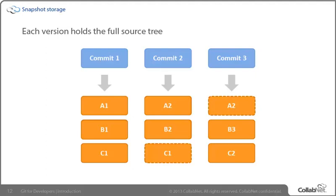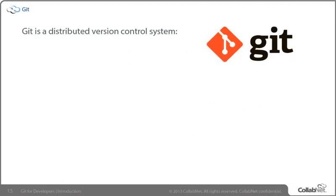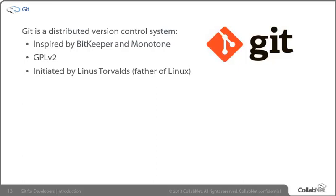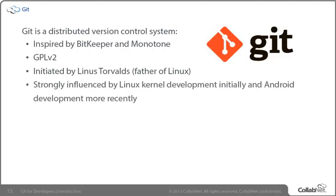You'll get a feeling for why storage approach is important as we walk through Git's functionality. Git is inspired by BitKeeper and Monotone, probably more by the former. The Git project was initiated by Linus Torvalds, father of Linux — because BitKeeper was used as the version control tool for Linux kernel development. BitKeeper's claim to fame for a long time was its use as the version control tool for Linux kernel development.